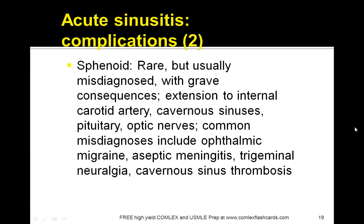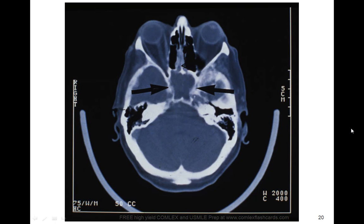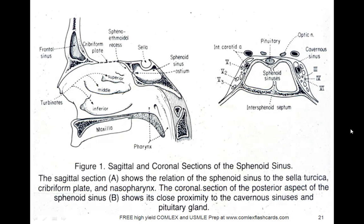Complications of the sphenoid sinuses are rare but are usually misdiagnosed with grave consequences. Extension can involve the internal carotid artery, cavernous sinuses, pituitary, and optic nerves. It is commonly misdiagnosed as ophthalmic migraines, aseptic meningitis, trigeminal neuralgia, or cavernous sinus thrombosis. Figure 1 shows sagittal and coronal sections of the sphenoid sinus. The sagittal section shows the relationship of the sphenoid sinus to the sella turcica, cribriform plate, and nasopharynx. The coronal section shows its close proximity to the cavernous sinuses and the pituitary gland. This diagram is extremely important to understand, as damage to these nerves can result from complications of sphenoid sinus disease.